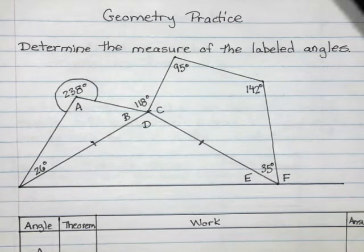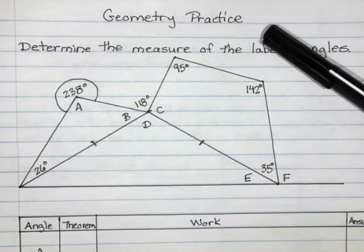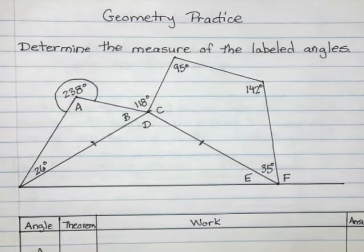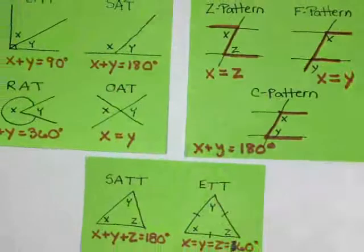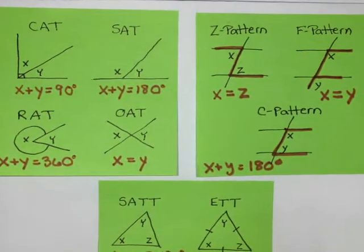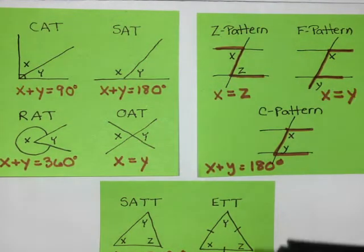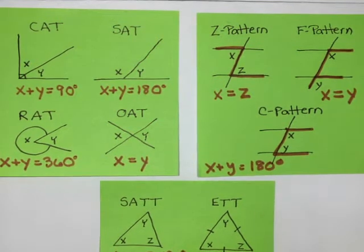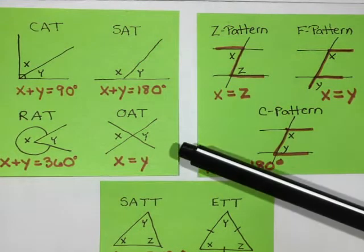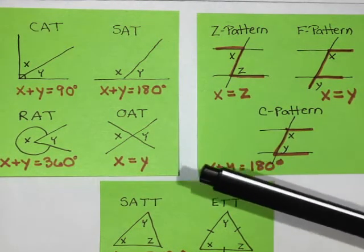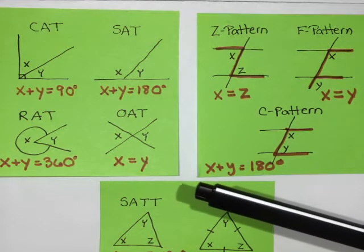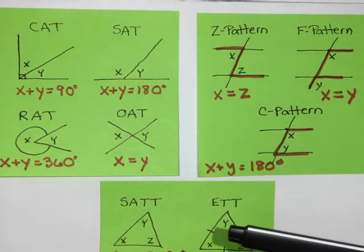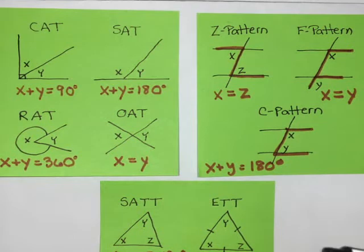Today we're going to be doing a little bit of geometry practice. Before we jump in and attempt our question, I want to talk about the theorems we've learned so far. If you printed out today's handout, you'll have a list of those theorems on that sheet. I would recommend that you make yourself a formula sheet of all the theorems — what the diagrams look like, what the angles add to, or if they're equal, or whatever's special about them.